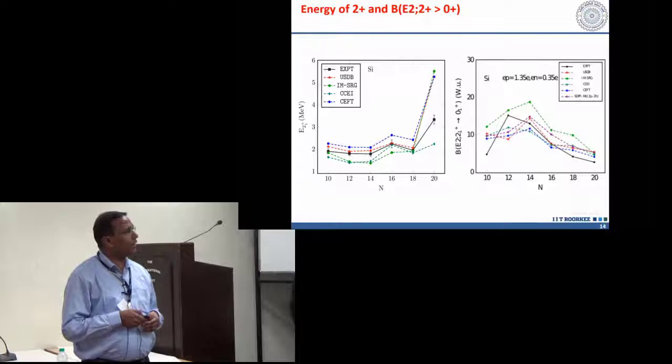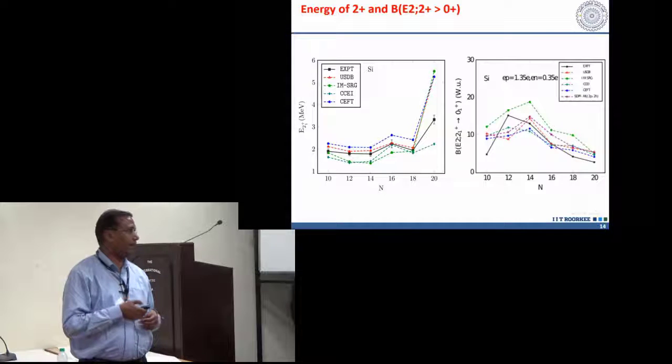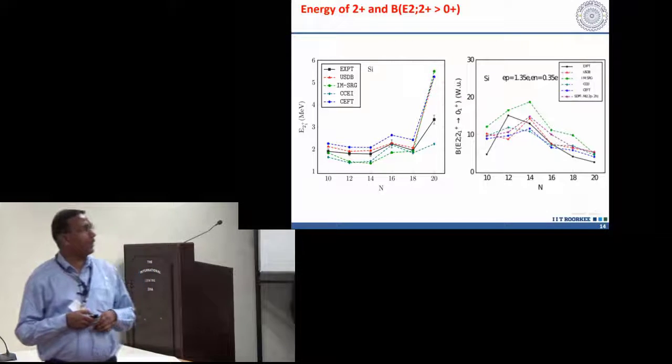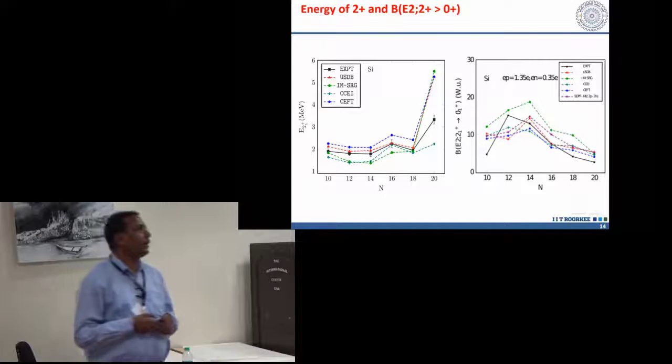Similarly, in the case of silicon, we can see again we have at N equal to 20 a problem here. But the important point is, collectivity is not so observed in the silicon, even SD shell is enough in this case.